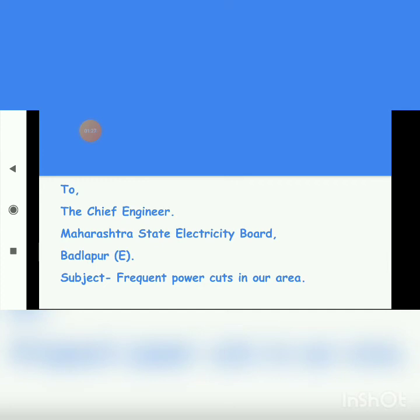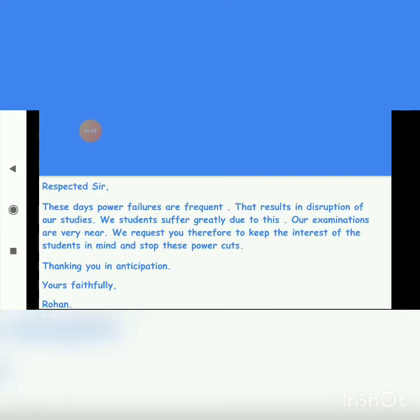The subject should be as short as possible, not more than 4 to 5 words. Then write the salutation: 'Respected Sir' or 'Respected Madam'. The body of the letter reads: 'These days, power failures are frequent. That results in disruption of our studies. We students suffer greatly due to this. Our examinations are very near. We request you therefore to keep the interest of students in mind and stop these power cuts. Thank you in anticipation.' Then write 'Yours faithfully, Rohan.' This is how we write a formal letter.